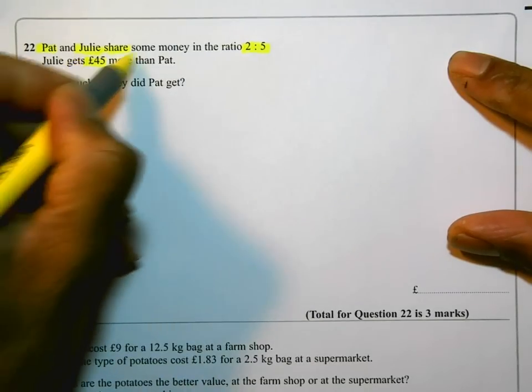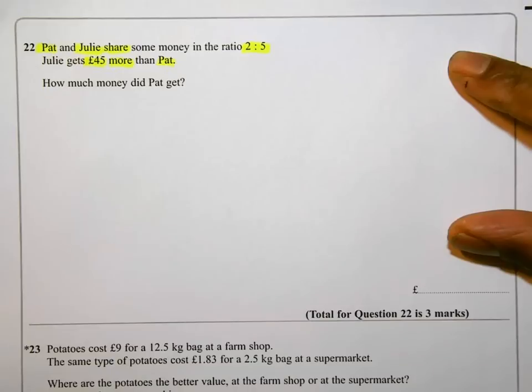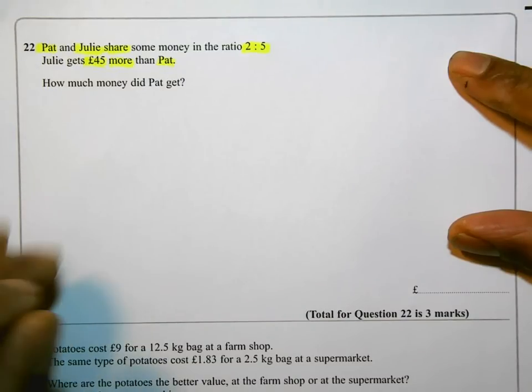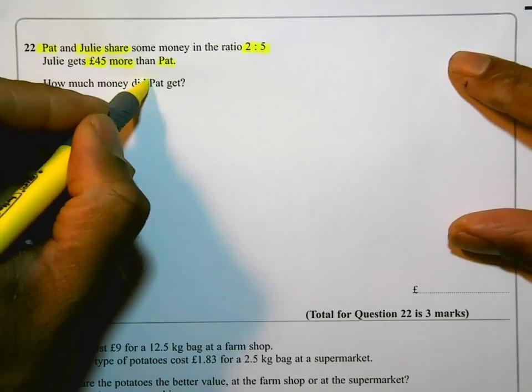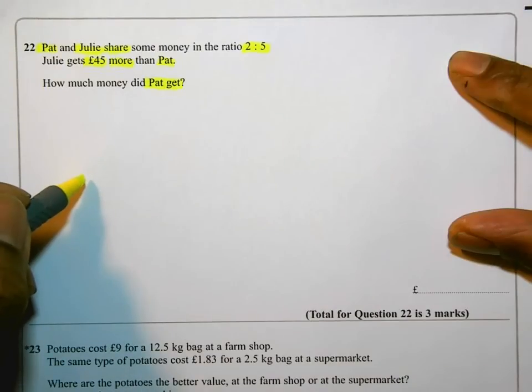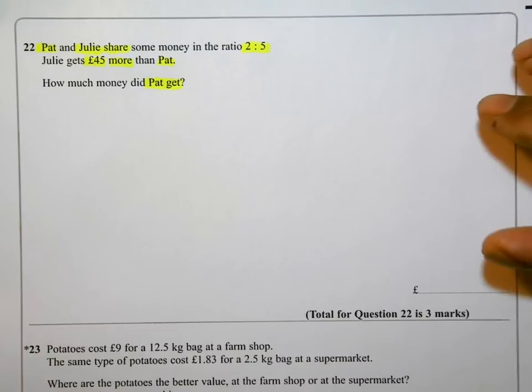Julie gets £45 more than Pat. How much money did Pat get? This is a ratios sharing question, but it's actually arranged in a different way to what you normally see.